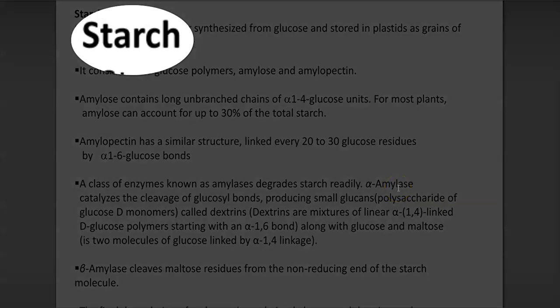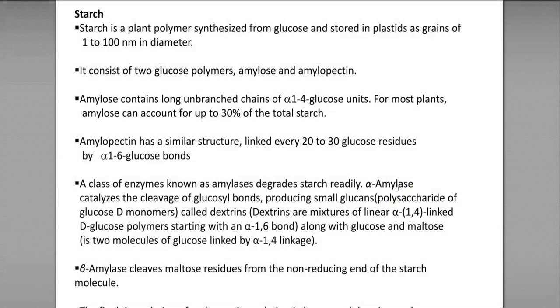The next component of organic matter subjected to degradation is starch. It is a plant polymer synthesized from glucose and is stored in plastids as grains of 1 to 100 nanometers in diameter. It consists of two glucose polymers — it can be of amylose or amylopectin in nature.